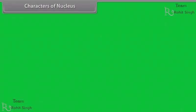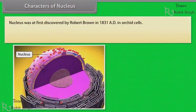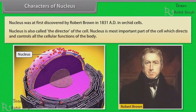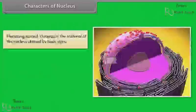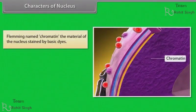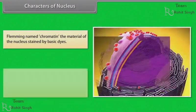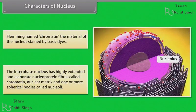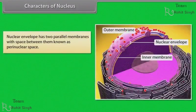Characters of nucleus. Nucleus was first discovered by Robert Brown in 1831 AD in orchid cells. Nucleus is also called the director of the cell. It is the most important part of the cell, directing and controlling all the cellular functions. Fleming named chromatin the material of the nucleus stained by basic dyes. The interphase nucleus has highly extended and elaborate nucleoprotein fiber called chromatin.